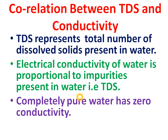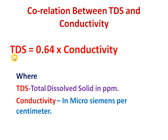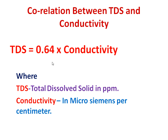Now we will see the correlation between TDS and conductivity. This is the equation which gives the correlation between TDS and conductivity: TDS is equal to 0.64 multiplied by conductivity. If you know the TDS of water, you can calculate the conductivity by putting the values in this equation. Or inversely, if you have the value of conductivity of water, you can calculate the TDS of that water by putting the value in this equation. The unit of TDS is ppm, that is parts per million.